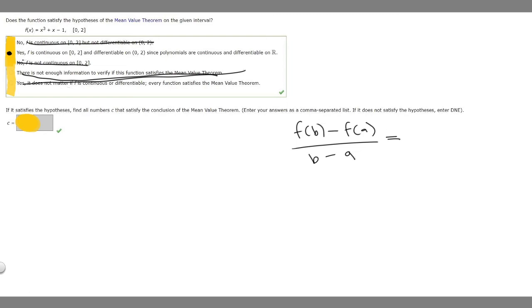So let's just solve this first, though. So f of b, what's f of b? If we say that b is going to be 2 and then a is 0, so we've got to find f of 2. So it's going to be 2 cubed plus 2 minus 1. So 2 cubed is 8 plus 2 is going to be 10.